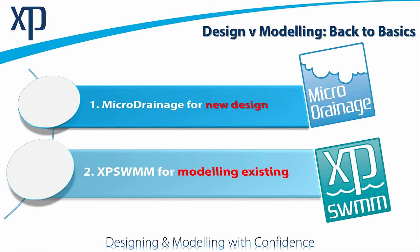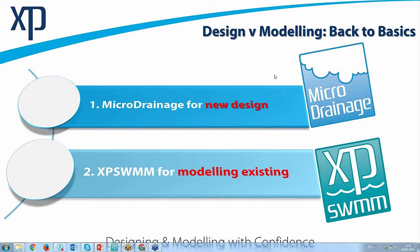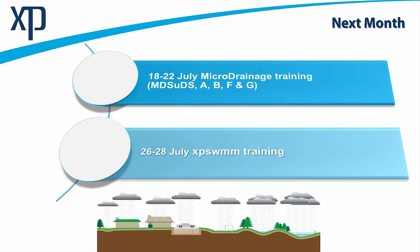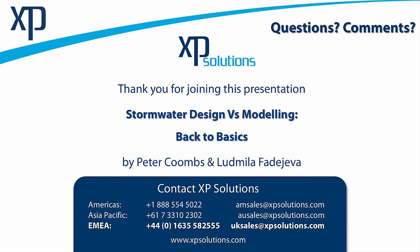I hope that was useful in understanding the differences between why we use Micro Drainage for new design and XP SWIM for modeling existing scenarios — so you can both design and model with confidence. Looking ahead this month, Micro Drainage training runs from the 18th to 22nd of July, and XP SWIM training from the 26th to 28th. Check the website to book — some Micro Drainage courses may already be full. Thank you all for your attendance, and I look forward to engaging with you again in the future.